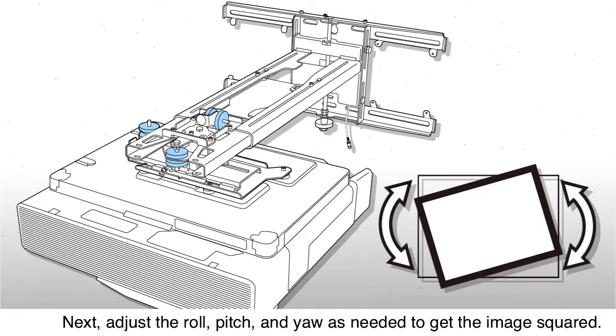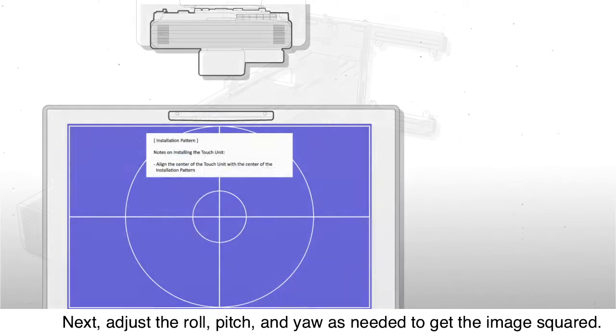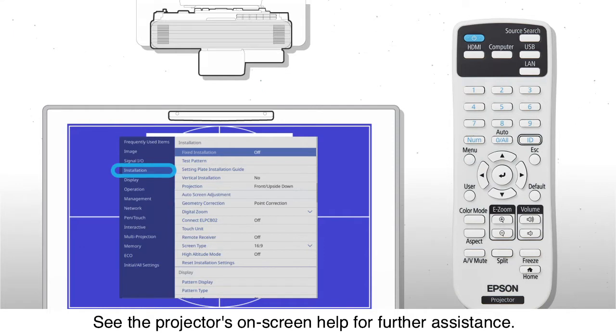Next, adjust the roll, pitch, and yaw as needed to get the image squared. See the projector's on-screen help for further assistance.